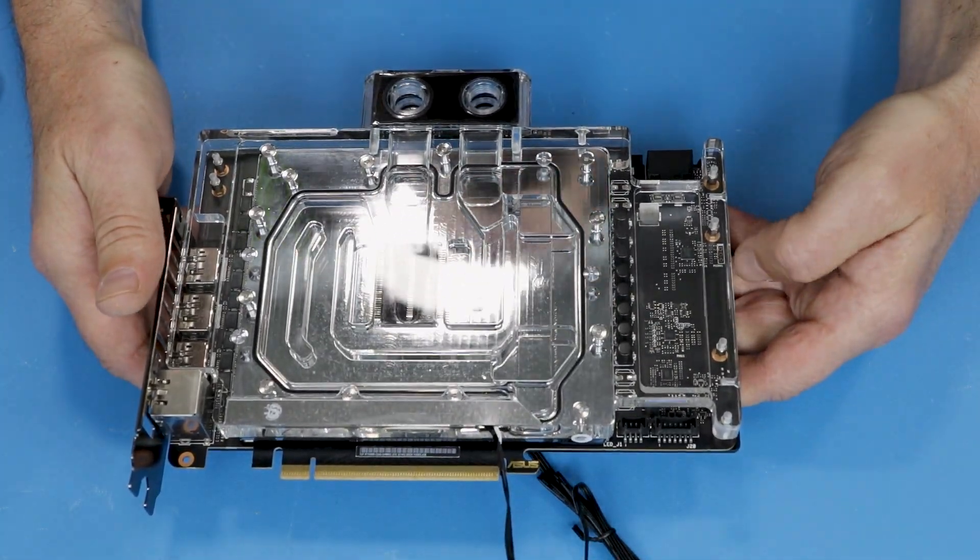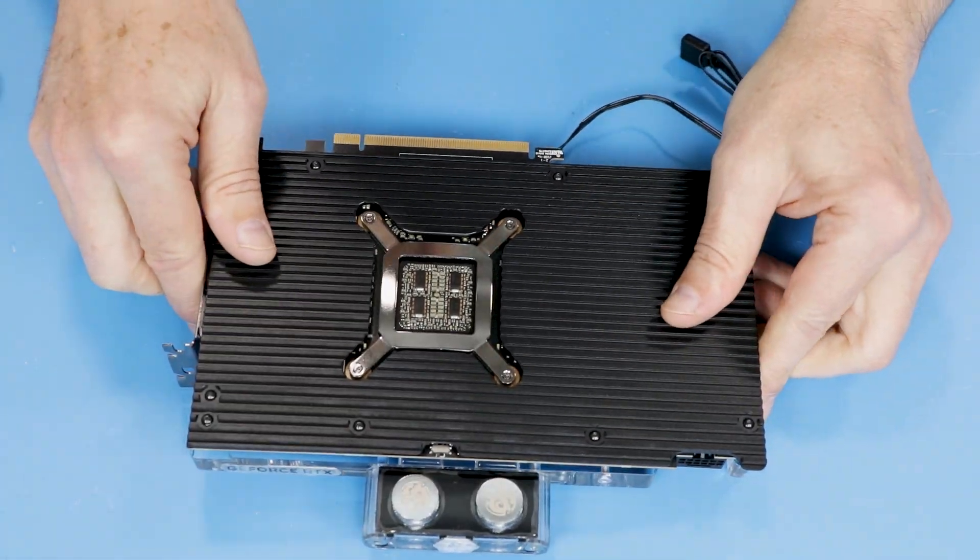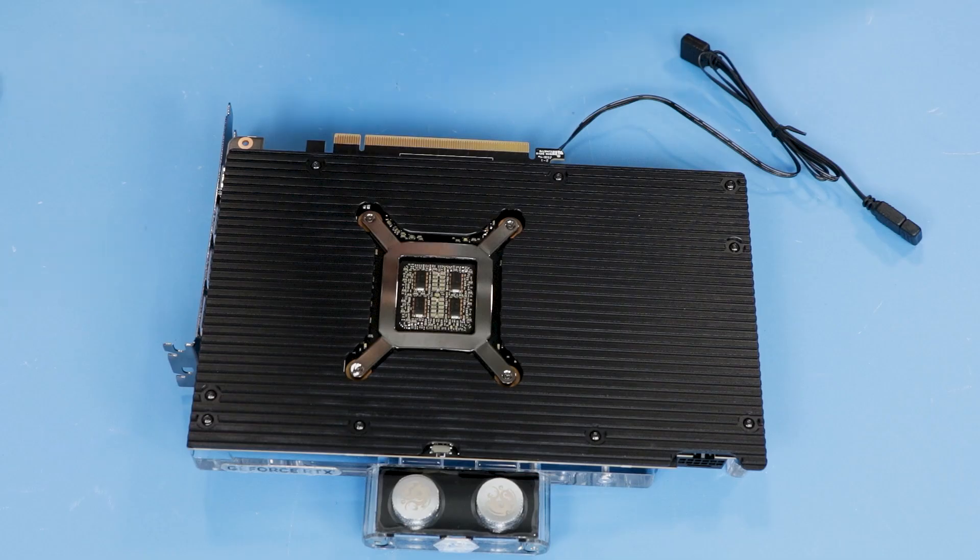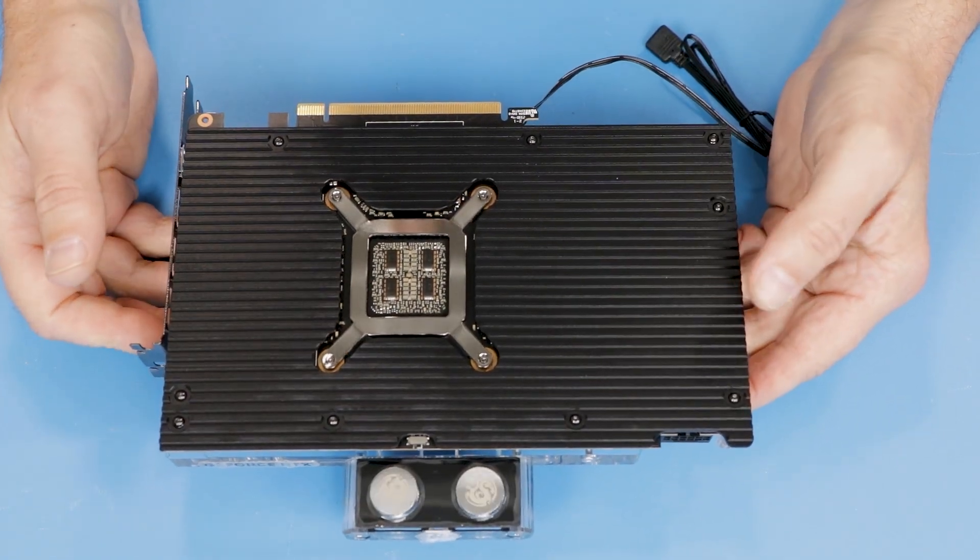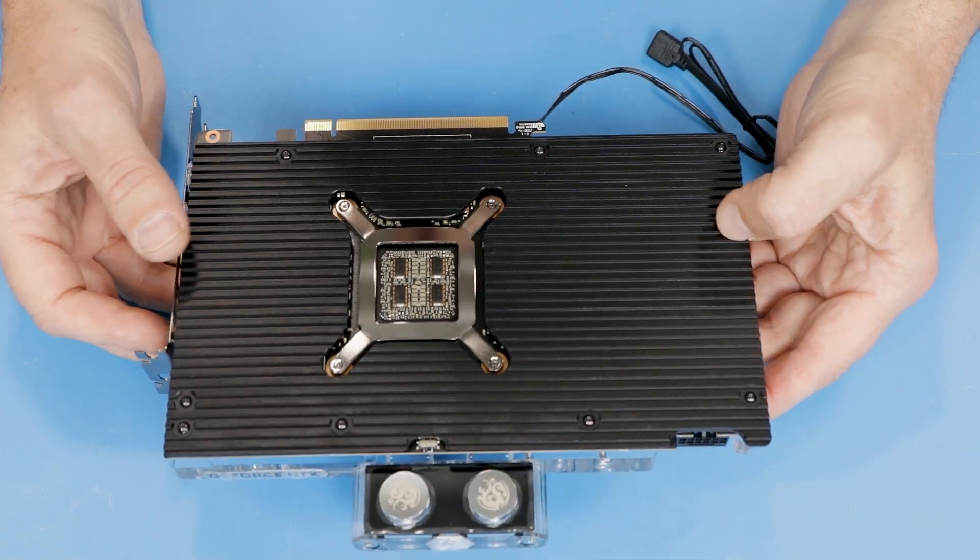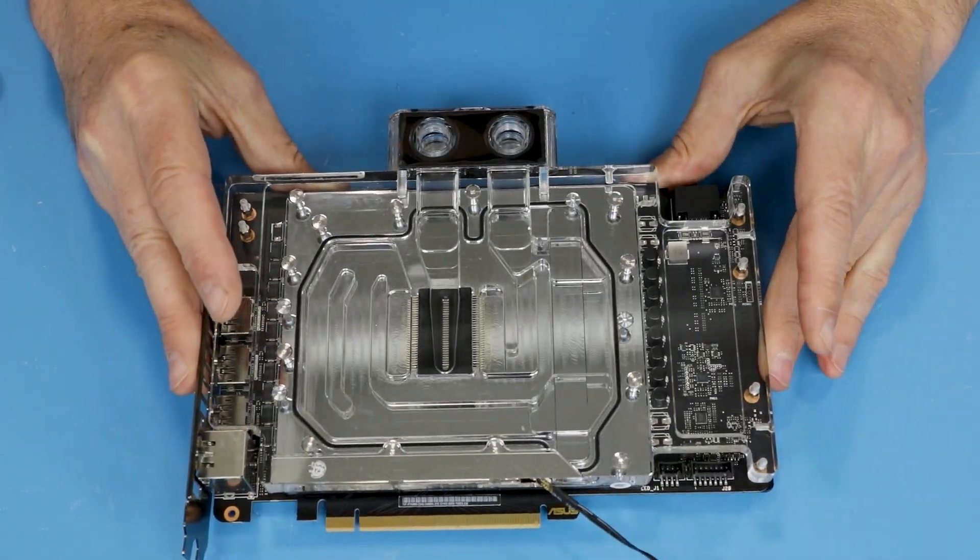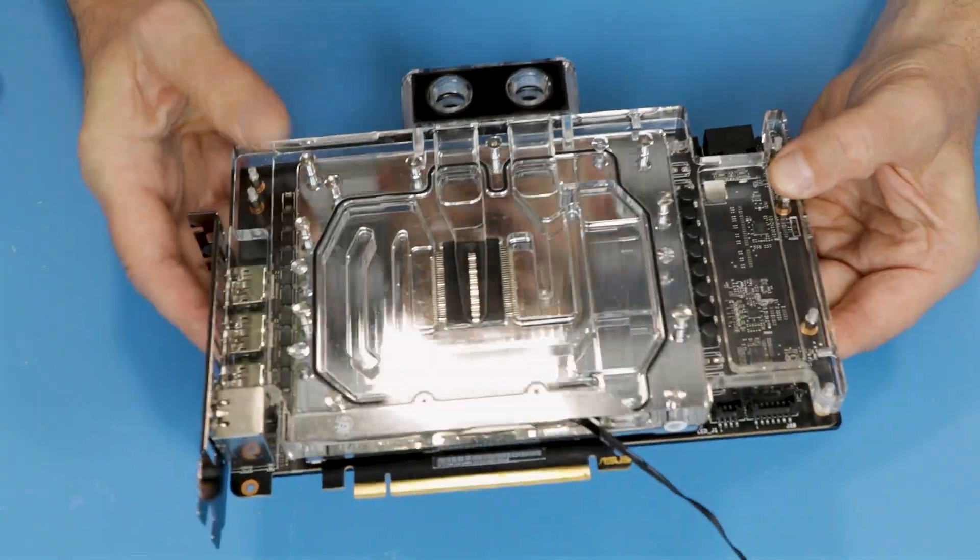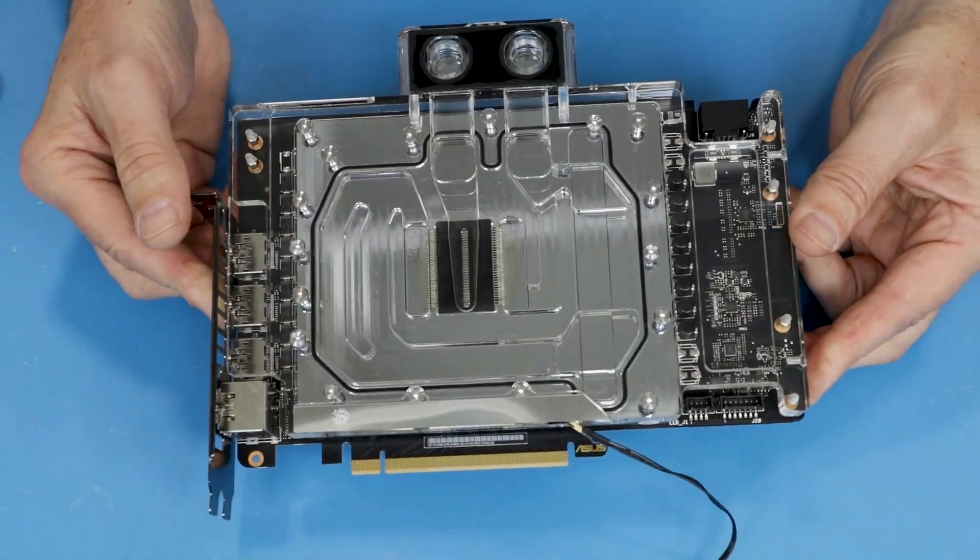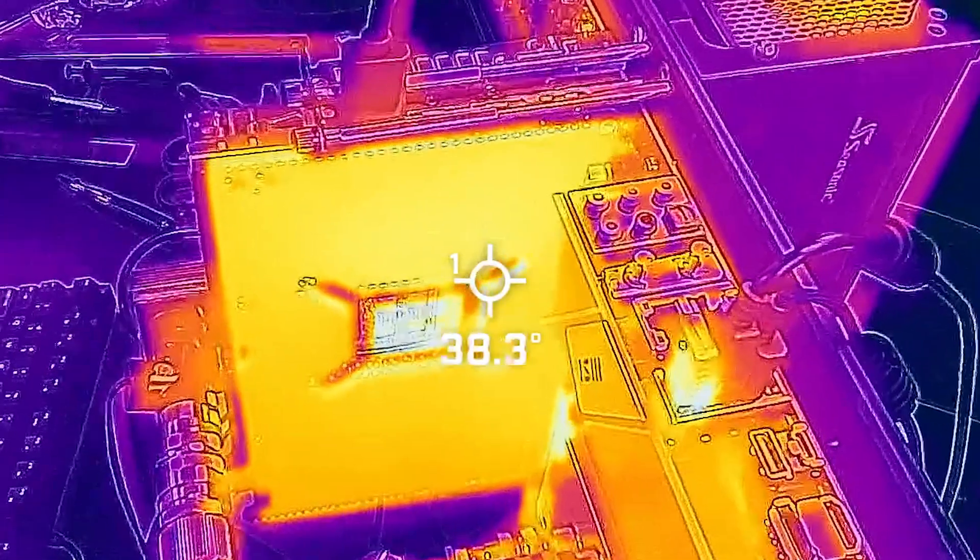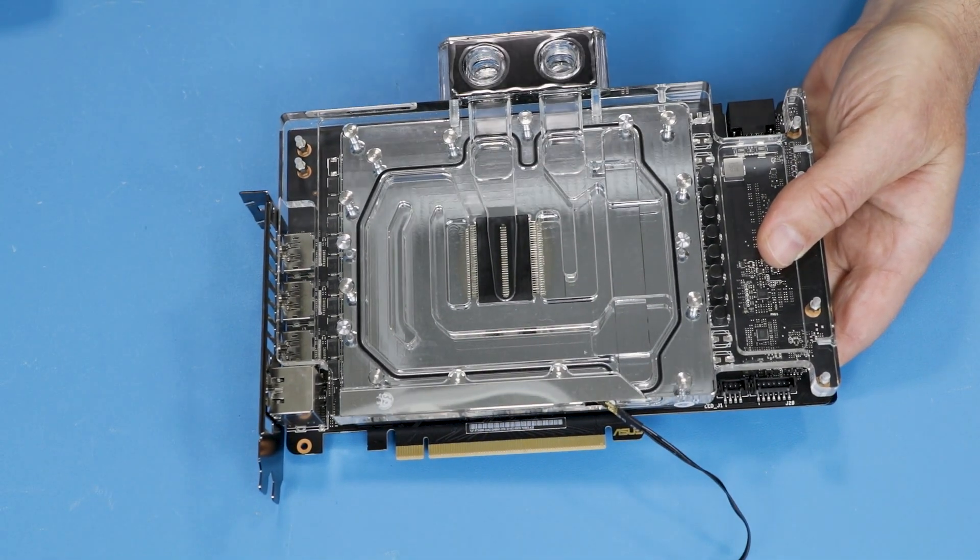In terms of installation experience, by far the fastest installation we've ever had. Minimum amount of screws, everything already pre-cut and attached in terms of thermal pads. The only thing I had to do is put the thermal paste on the PCB. That's very fast installation, that's for sure. Thank you for watching. We'll put the block in action, we'll see how it performs, and that will be in a separate video with the results. Thank you for joining me. See you soon, guys.